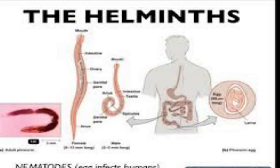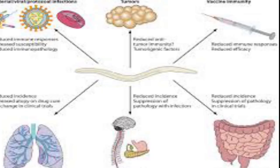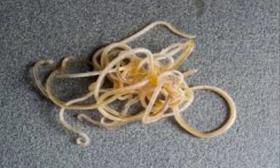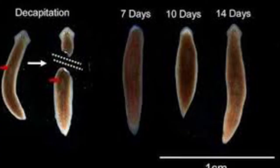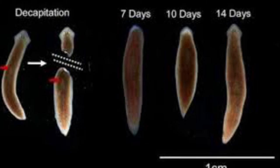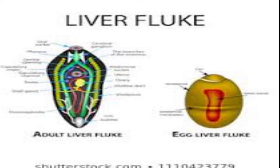We also have another group of parasites called helminths. These helminths are otherwise called worms. Under this, we have two broad categories. We have the round worms, which we call nematodes. And then we have the flat worms, which we call the platyhelminthes. We can further divide the platyhelminthes into cestodes, or tapeworms, and then trematodes, or flukes.